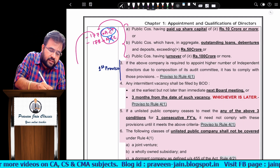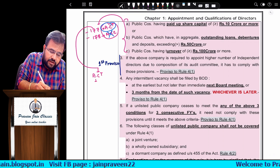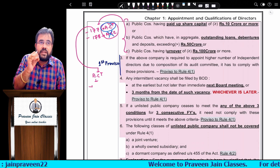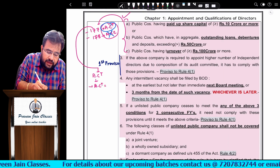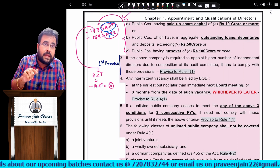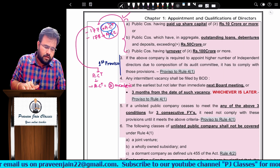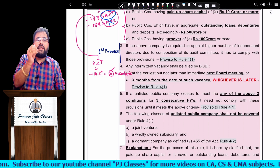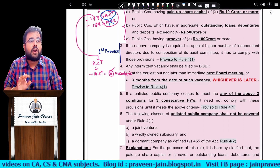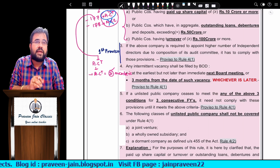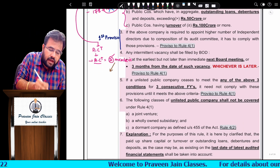As per Section 177, a company forming an audit committee must have at least three members — we say members, not directors, because to be a member of the audit committee you must already be a director. So every audit committee member is a director, hence we use the word 'members.' The audit committee must have at least three members, and a majority of them should be independent directors.